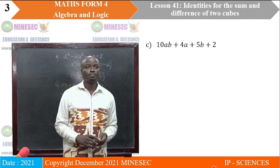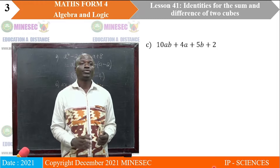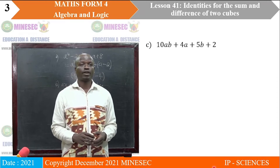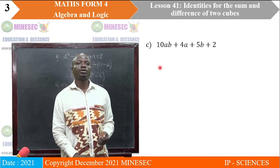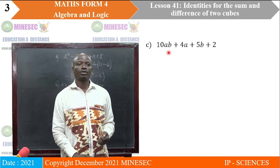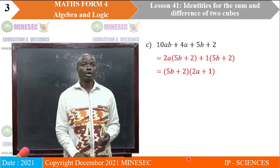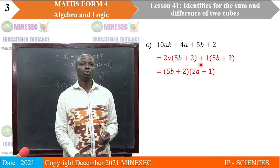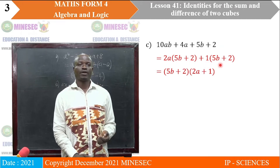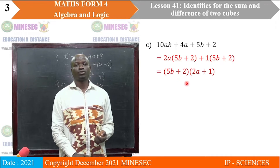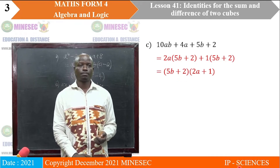The third expression is 10AB plus 4A plus 5B plus 2. In the first two terms, 2 is a common factor between 10 and 4, and A is also a common factor. So we factor out 2A, giving us 2A into 5B plus 2. For the last two terms, there is no common factor other than 1, so 1 multiplied by 5B plus 2 gives exactly those terms. We then factor out 5B plus 2, leaving 2A plus 1. So the factorization is 5B plus 2 into 2A plus 1.